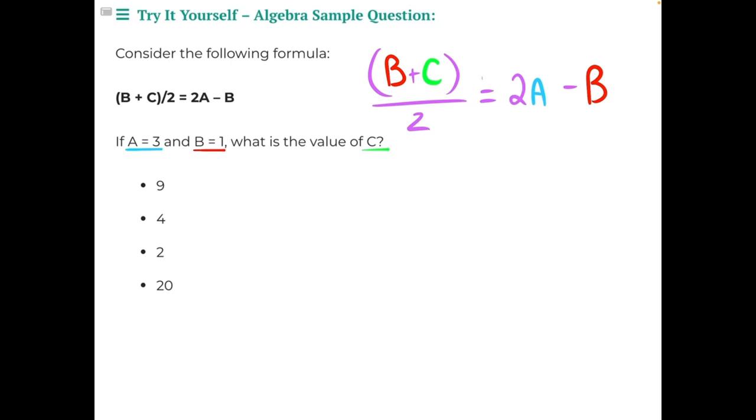To find the value of c, we need to perform a series of substitutions where we substitute 3 in for all of the a's in our equation and substitute 1 in for all of the b's of our equation. And then we can use order of operations and opposite operations to isolate our variable and find the value of c. So let's start by doing some substitutions.